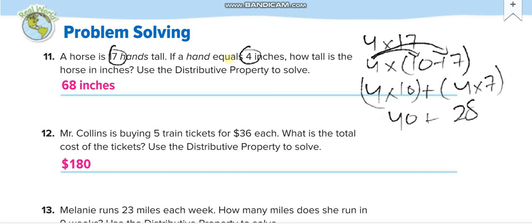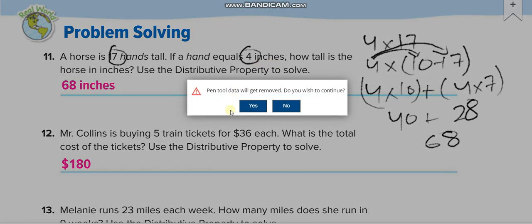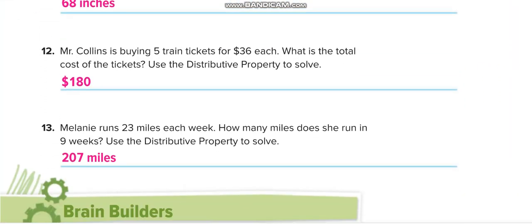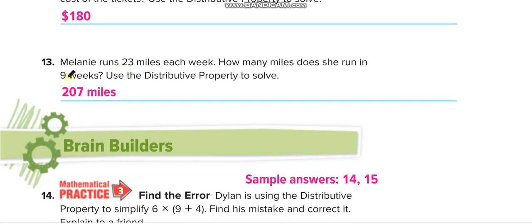Similarly here, 5 times 36. You break it into 30 and 6. 5 times 30 is 150, and 5 times 6 is 30. So 150 plus 30 equals 180. Next one, 23 times 9. Break into 20 and 3. 20 times 9 is 180, and 3 times 9 is 27. So 180 plus 27 equals 207.